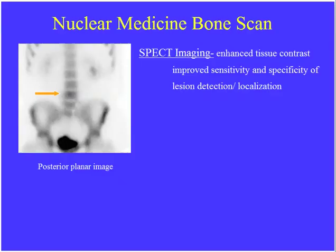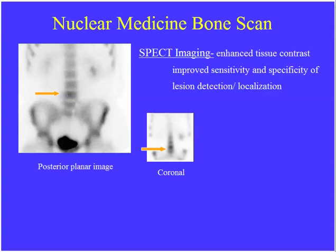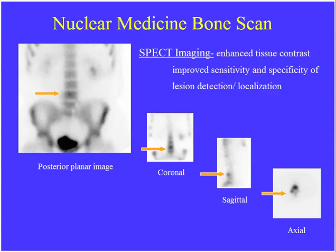The three phases are: arterial phase, blood pool phase, and the four-hour delay. Over the last couple of years, CT has been added to nuclear medicine bone scan imaging. On a planar image looking through the lumbar spine, we see increased uptake in the L4 vertebral body. Adding CT, we look in the coronal plane and see abnormal uptake at L4; in the sagittal plane, the uptake is in the posterior elements; and on axial cut, the uptake is in the right pars interarticularis. Rather than just knowing something's happening at L4, adding CT increases specificity.